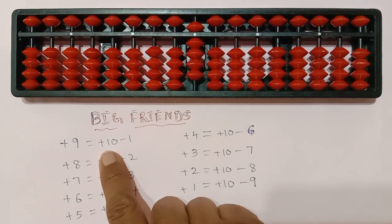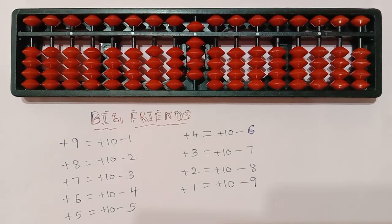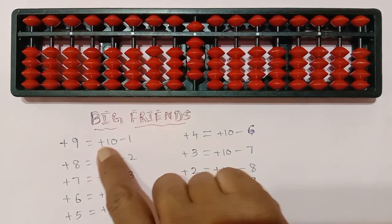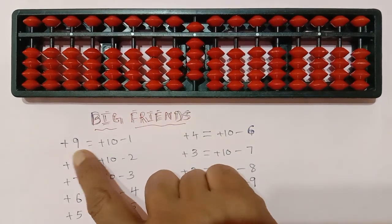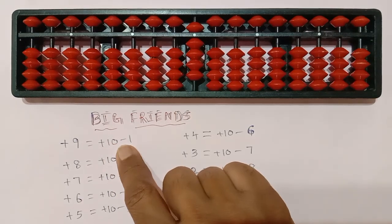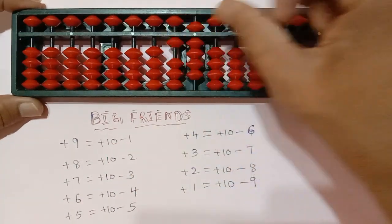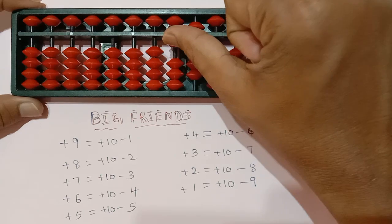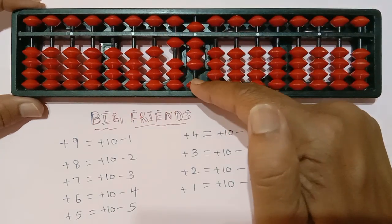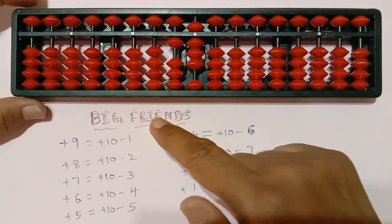We have to add 10 minus 1. To add 9 we have to add 10 minus 1. Means here we have to add this one — add 10 and minus 1. So this is about the big friends.